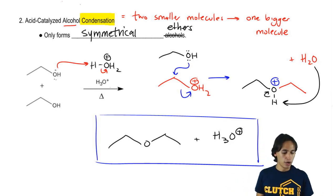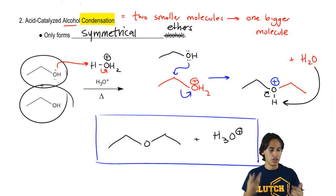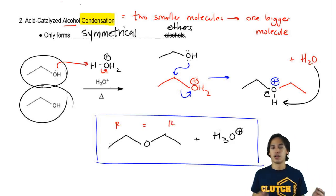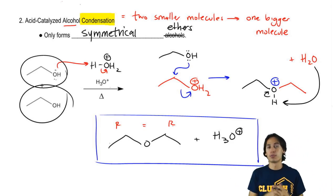and you're going to wind up getting the same R groups on both sides. So that's why I'm saying that it's symmetrical because you're always going to get the same R groups on both sides.